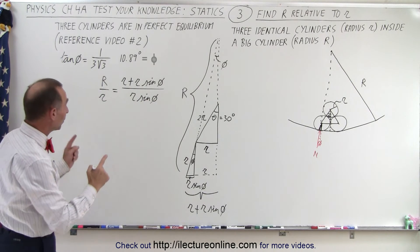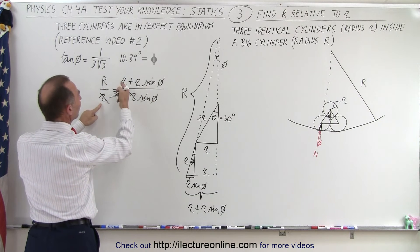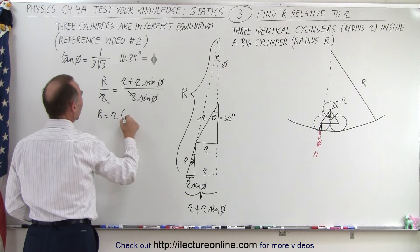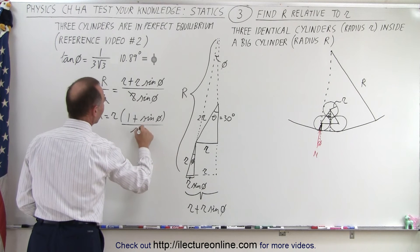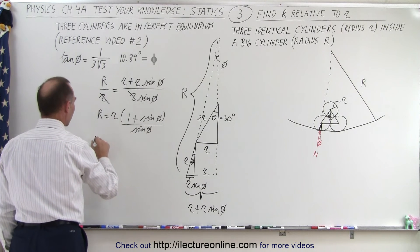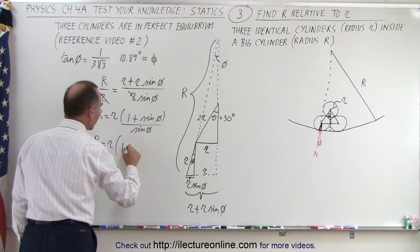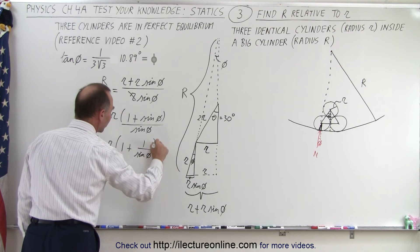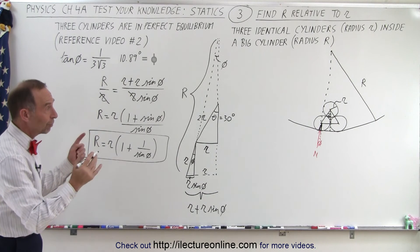Now we can multiply both sides by r so that the r's cancel, and factor out an r. We have R equal to little r times one plus sine of phi, divided by sine of phi. And finally, dividing the bottom into the top, we get R equals little r times one plus one over sine of phi.